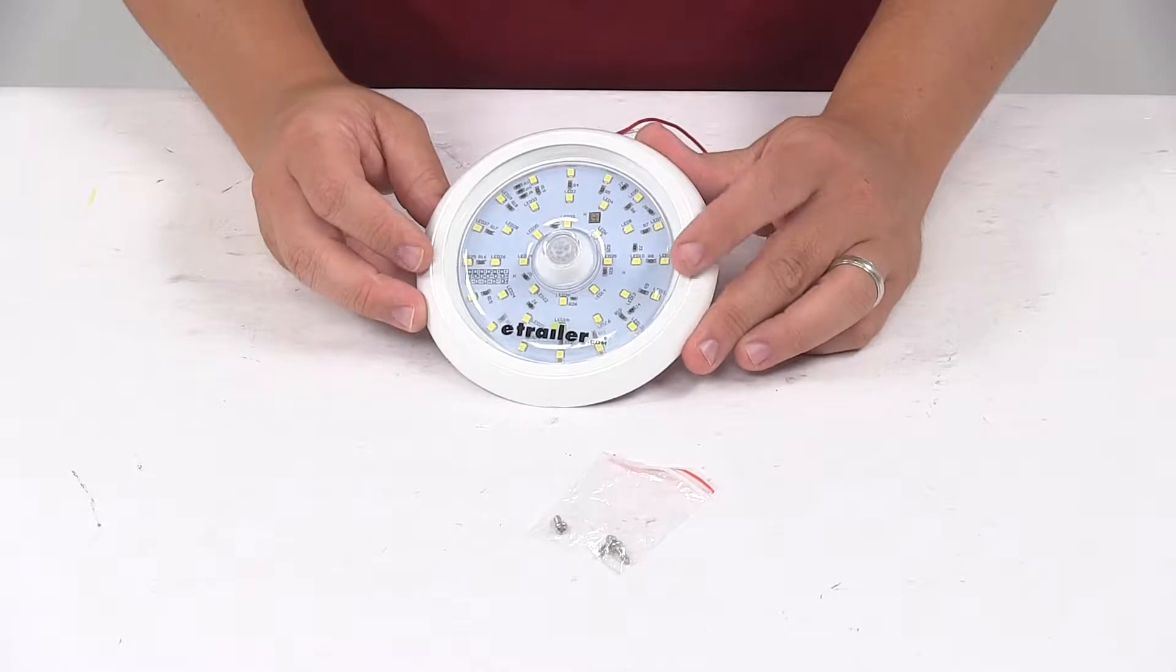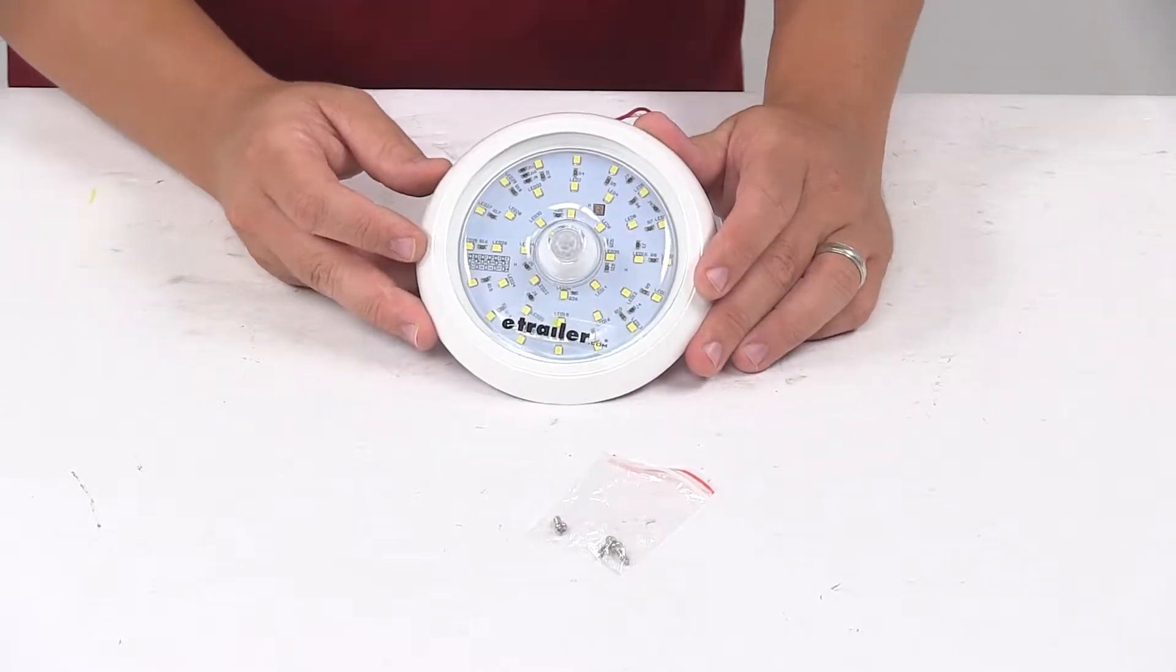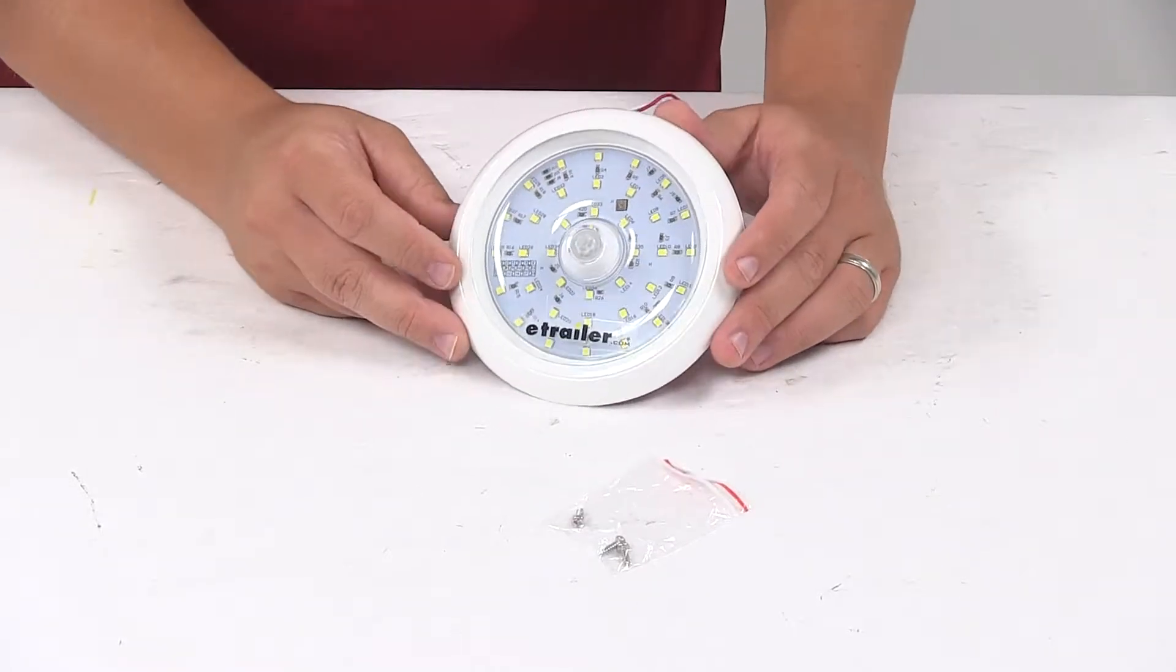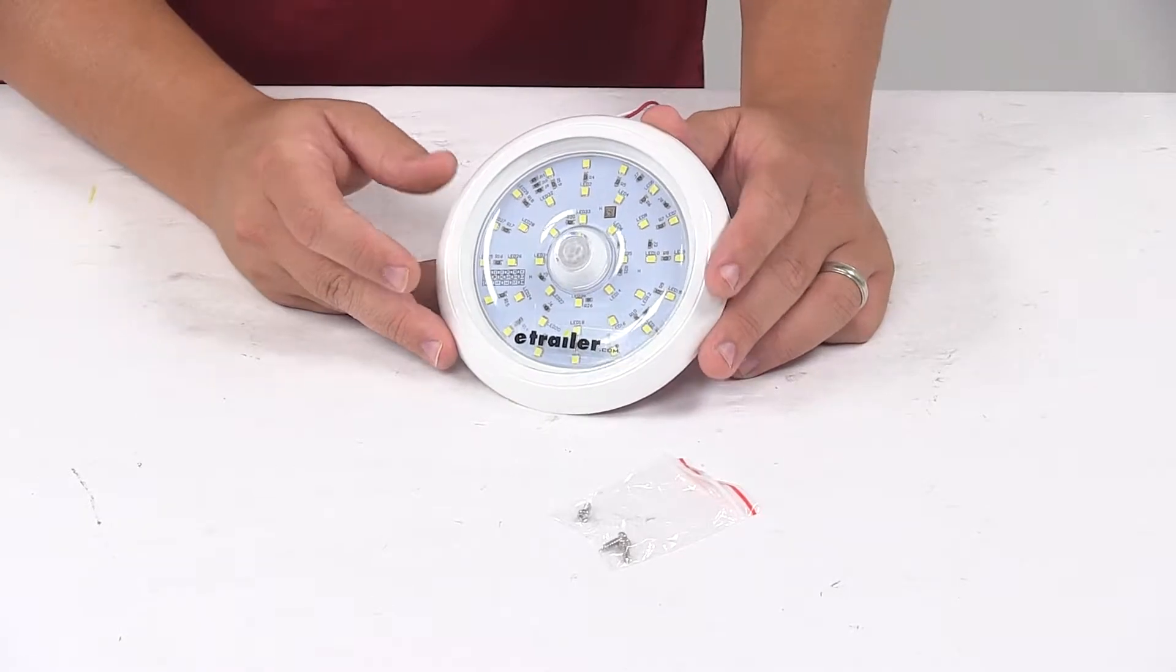LEDs make great replacements for incandescent lights. They last longer, burn brighter, and are more efficient. With LEDs you don't have to worry about brittle filaments or replacing bulbs.